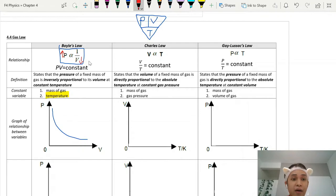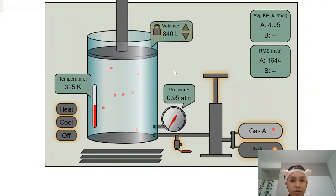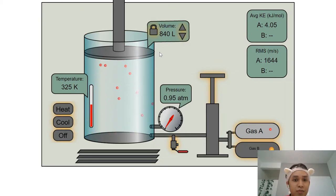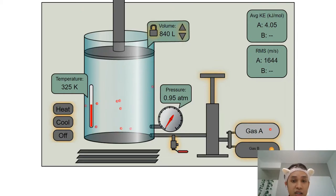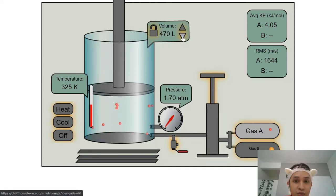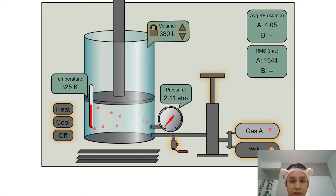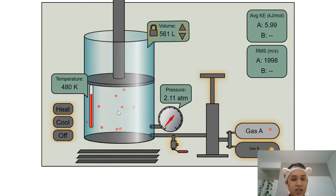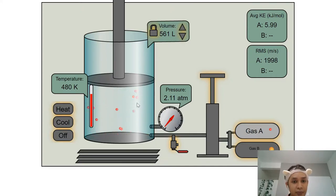Now we look at the second law, which is Charles' Law. Charles' Law studies the relationship between volume and temperature. In the simulation, if I'm studying volume and temperature, the air pressure must be set as constant — I'm not going to adjust the air pressure. As I increase the temperature, you can see the collision happens faster, because the air molecules gain heat energy, so their kinetic energy increases and the collision happens faster.